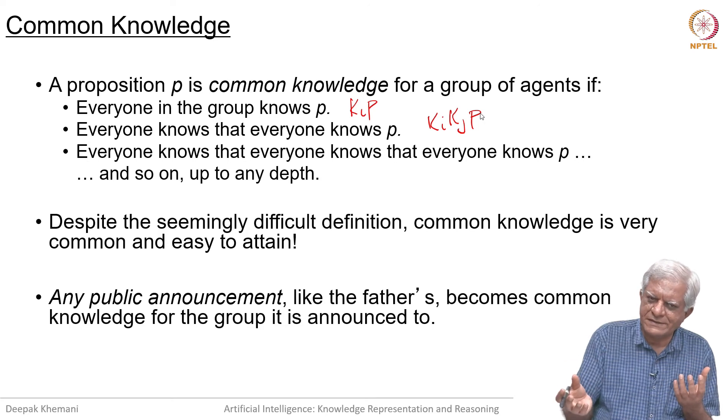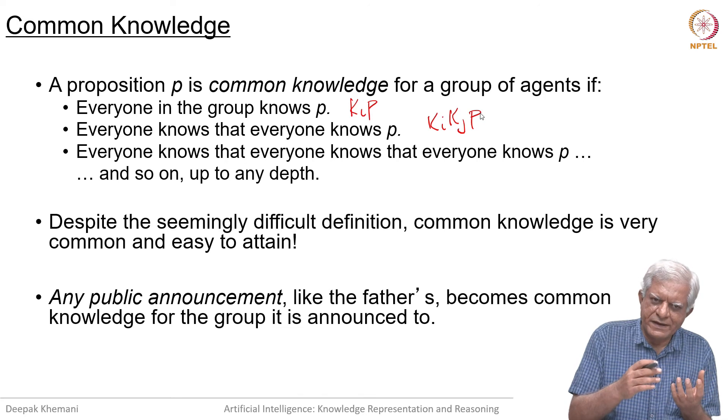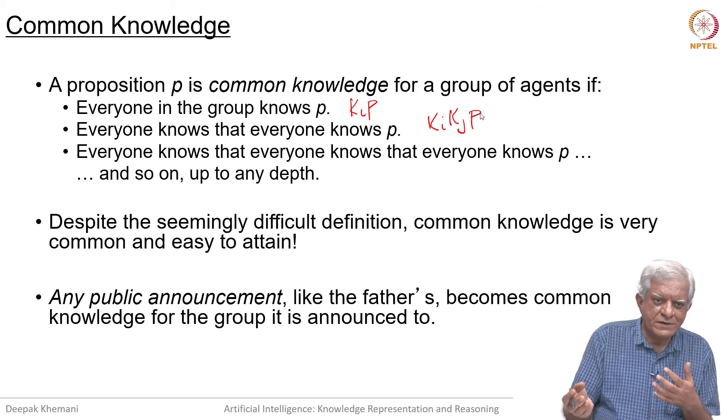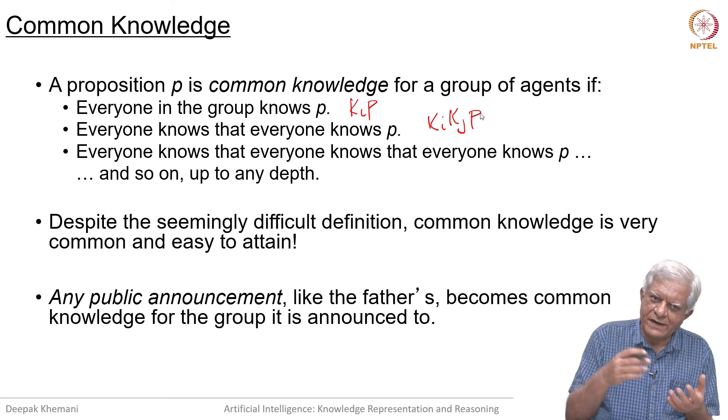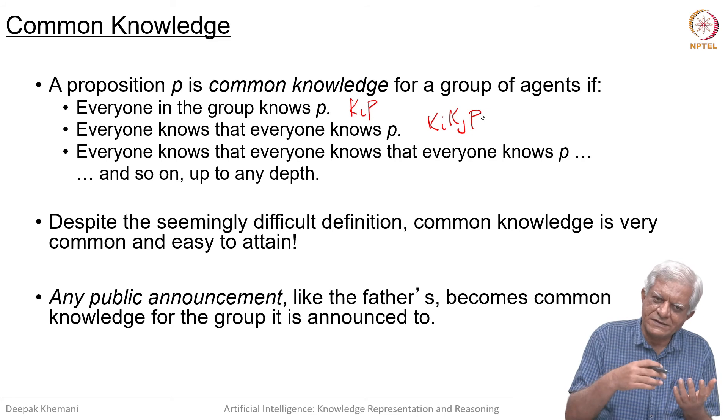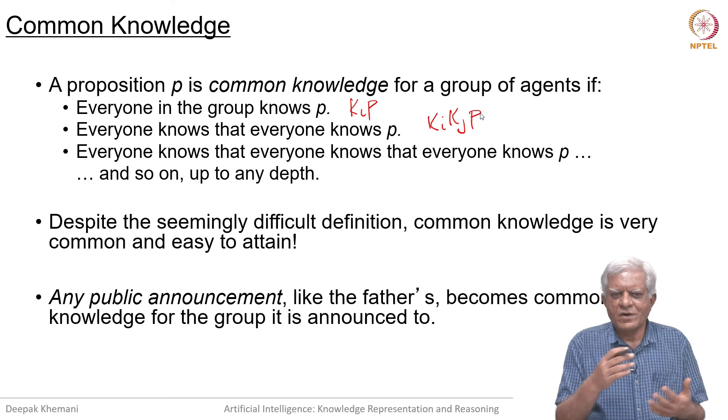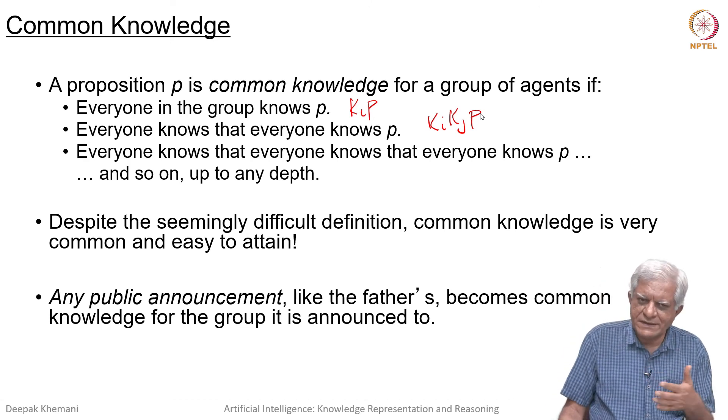When general B gets the message, then general B will send an acknowledgement saying yes I received your message. Therefore, general A knows that general B has received the message. Can they attack? But general B is still not sure whether his acknowledgement has been received by general A. General B will wait for A to tell him that he has received the acknowledgement. You can see that this process can go on indefinitely, and common knowledge is very difficult to obtain in such scenarios.